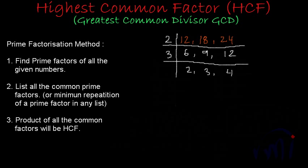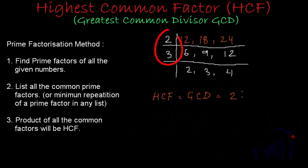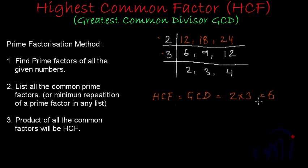Now talking about the HCF, in this case the HCF or GCD — the greatest common divisor — will be equal to 2 × 3 = 6. So 6 will be the greatest common divisor of 12, 18, and 24.